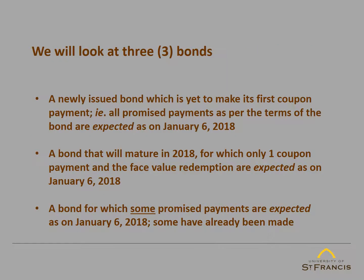On the date that a bond is newly issued, as per the terms of the bond, it promises investors a stream of coupon payments and the final face value redemption on the maturity date. If you are trying to value the bond on any other date between the issue date and the maturity date, all these promised coupon payments may not all be expected — some of them may have been paid out already. So in order to distinguish between expected cash flows which contribute to the value of the bond versus the stream of payments promised on the issue date, we will look at three bonds.